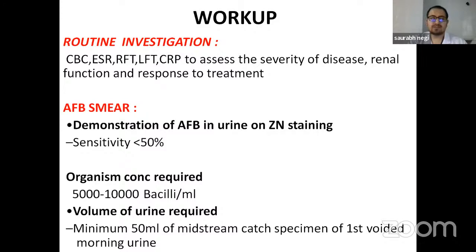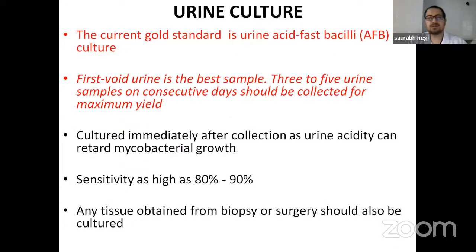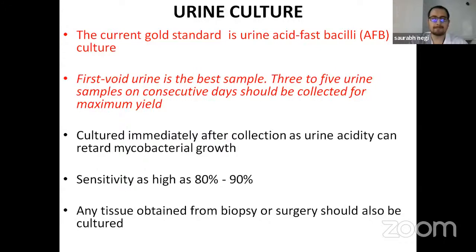AFB smear of urine with ZN staining has a sensitivity less than 50%, requiring 5,000 to 10,000 bacilli per ml with a minimum concentration of 50 ml of midstream, first-voided morning urine specimen. Urine culture is the current gold standard for acid-fast bacilli culture. First-voided urine is the best sample; three to five consecutive samples should be collected. Culture immediately after collection, as urine acidity can retard mycobacterial growth. Sensitivity is as high as 80 to 90%. Any tissue obtained from biopsy or surgery should also be cultured.